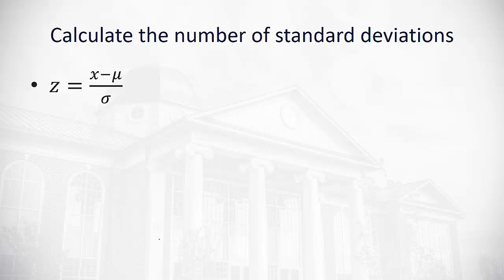The formula z equals x minus mu over sigma, or our data value minus the mean divided by the standard deviation, is called the z-score. This z-score tells us the number of standard deviations a value is from the mean.